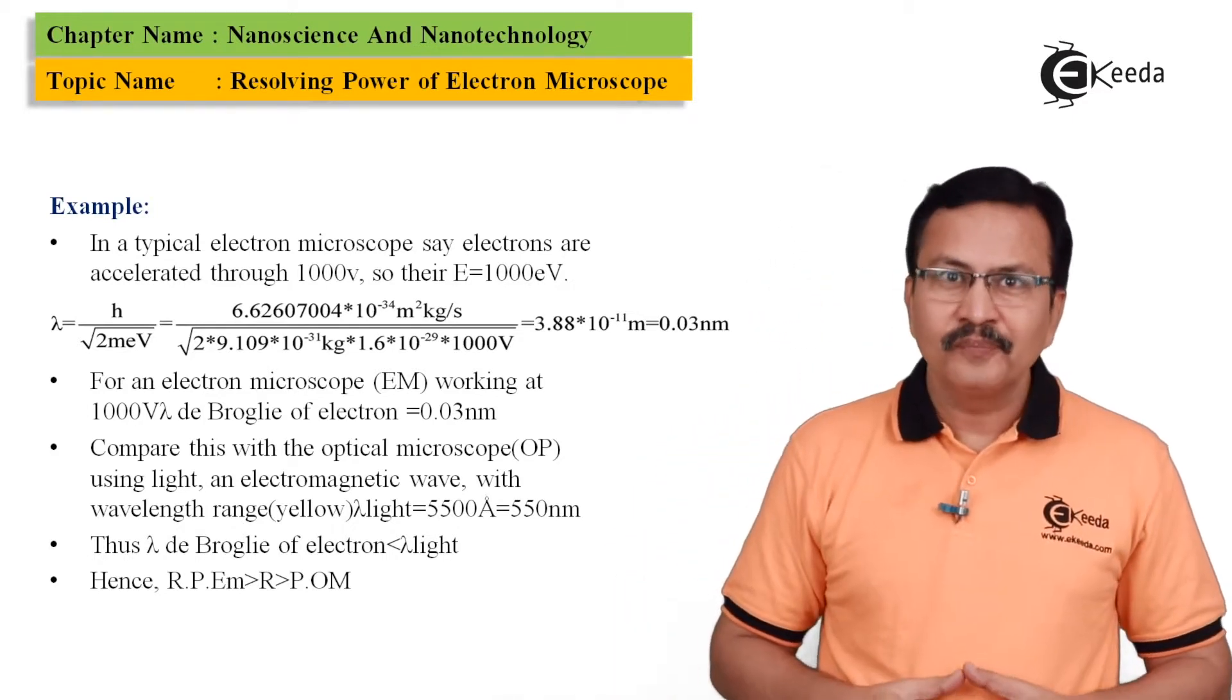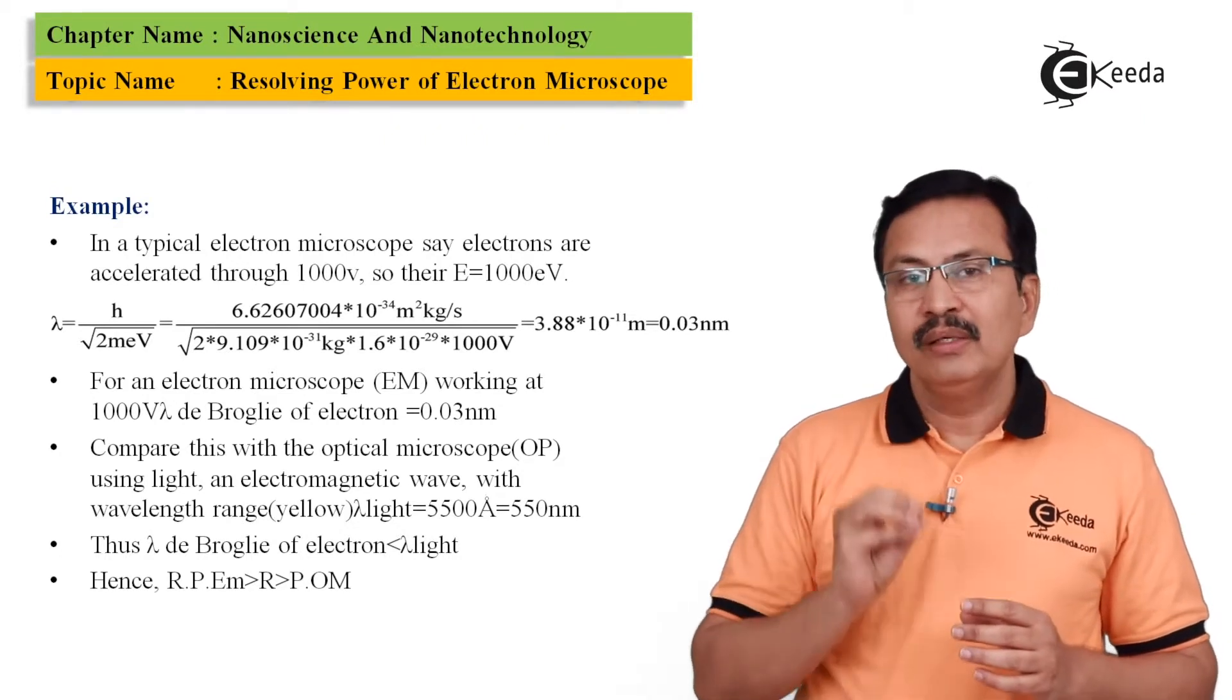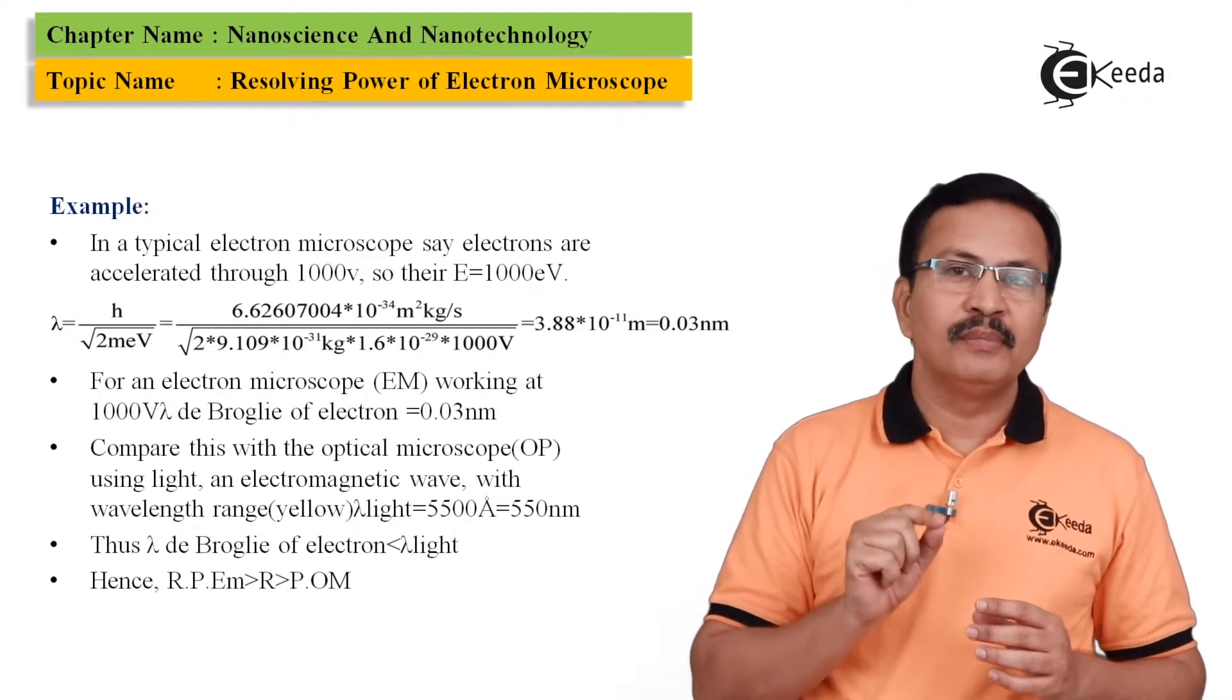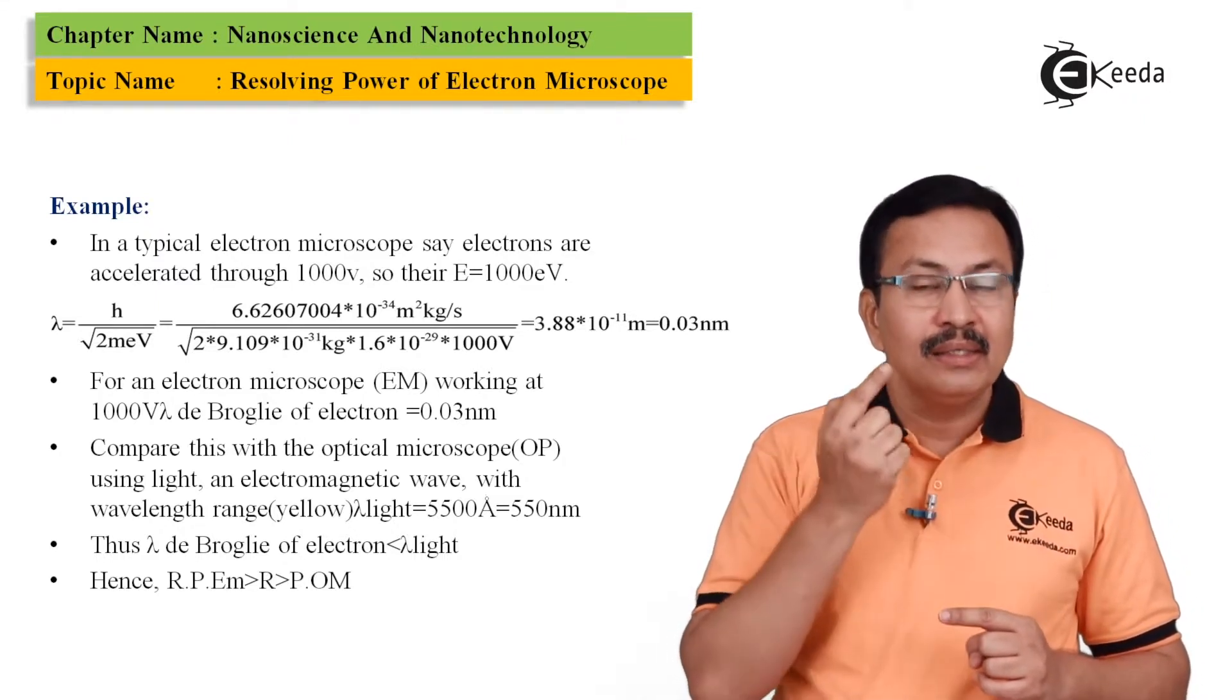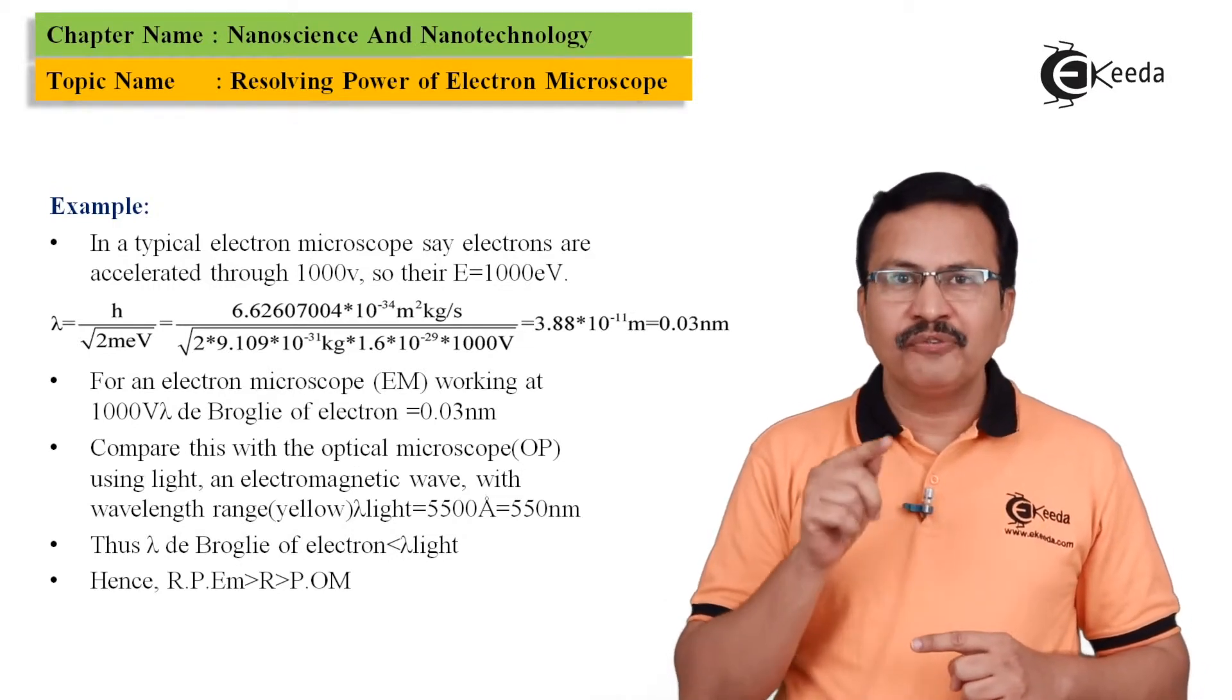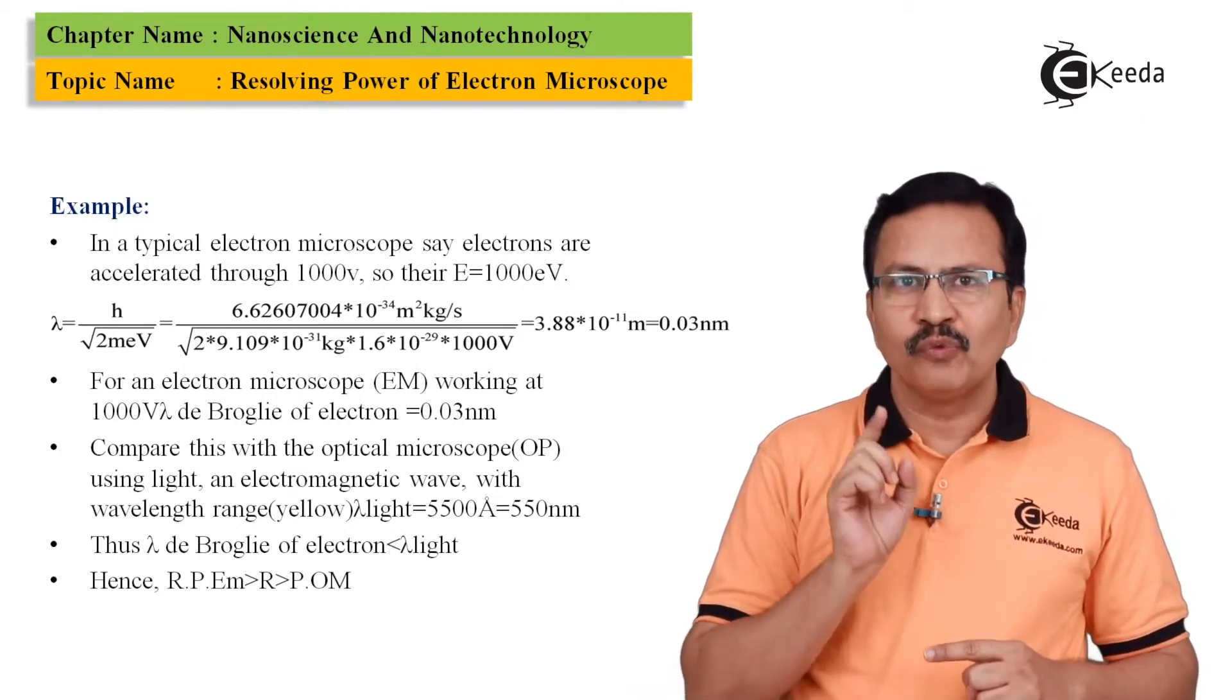In our example, the value of e turns out to be 1.6 × 10⁻¹⁹ coulomb. As you know, that this is nothing but the charge on a single electron. At the same time, the value of V, as you know, is nothing but 1000 volts.